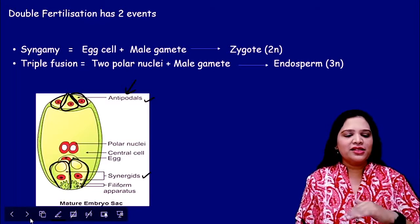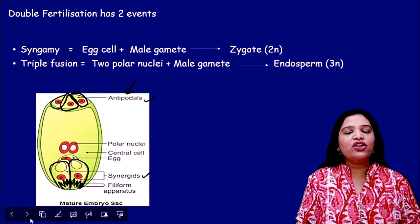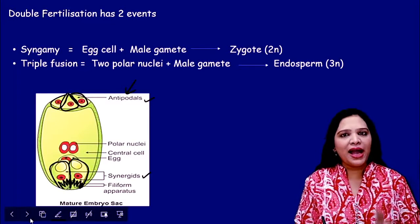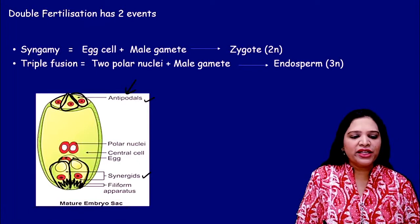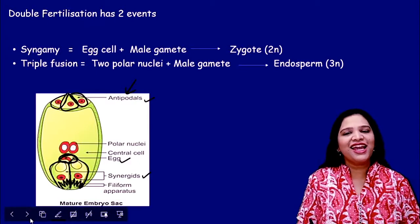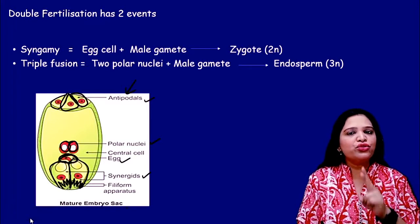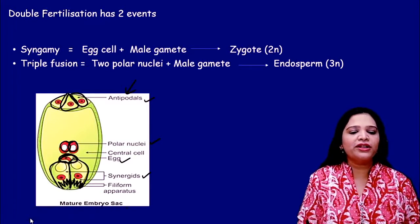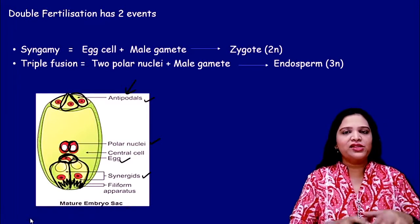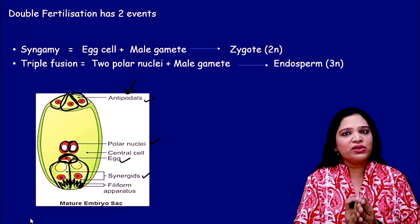On the synergid cells there are finger-like projections called the filiform apparatus. At the micropylar end there is a third cell — the egg cell. In the central cell there are two nuclei called the polar nuclei. This is the structure of a mature embryo sac.